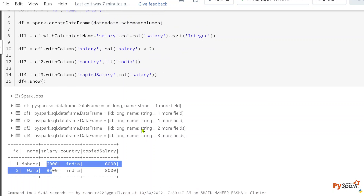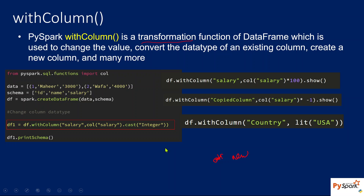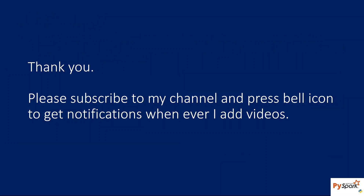To recap: we used withColumn to change a column's data type, to update values in an existing column, to create a new column with a literal value using lit(), and to create a new column by copying values from an existing column. The withColumn function is very useful in real-time scenarios. I strongly encourage you to watch this explanation multiple times if needed. Thank you for watching — please subscribe to my channel and press the bell icon to get notifications whenever I add new videos.